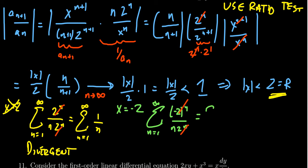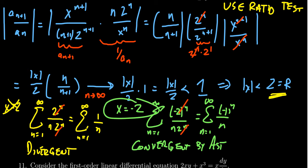You get the sum of negative 1 to the n over n, n equals 1 to infinity. This is the alternating harmonic series, and this one actually is convergent by the alternating series test. So negative 2 should be included in the interval.